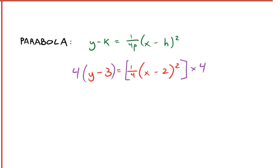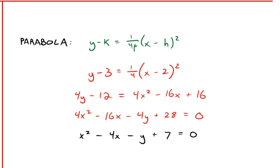There's the multiply by 4. Distribute the 4. Expand the (x - 2)². Combine like terms. Move stuff around. Divide everything by 4. And you have a formula with coefficients 1, -4, -1, and 7.